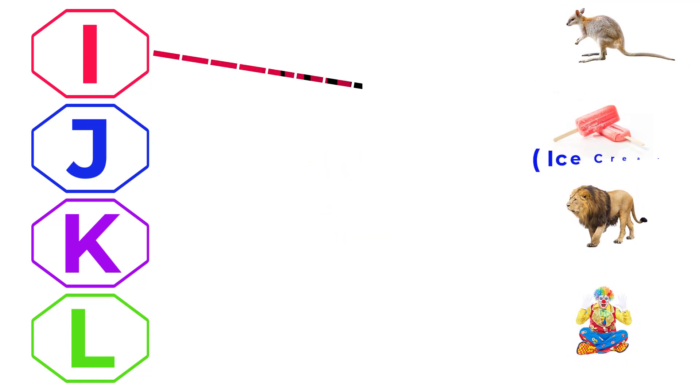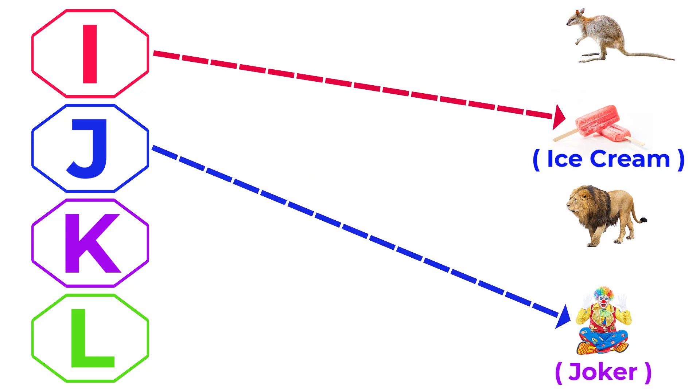I for Ice Cream, J for Joker, K for Kangaroo, L for Lion.